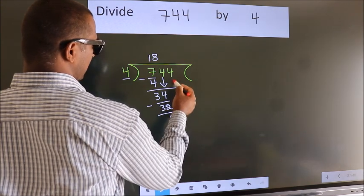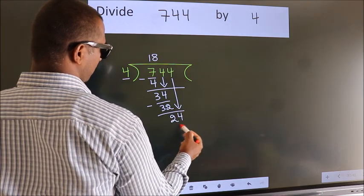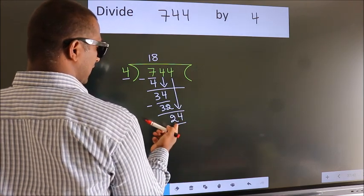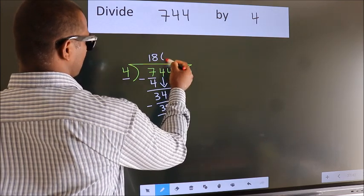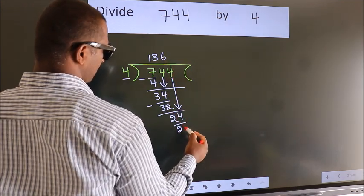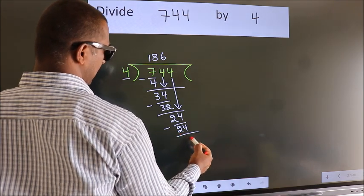After this, bring down the beside number. So 4 down. So 24. When do we get 24? In 4 table, 4 6 24. Now we subtract. We get 0.